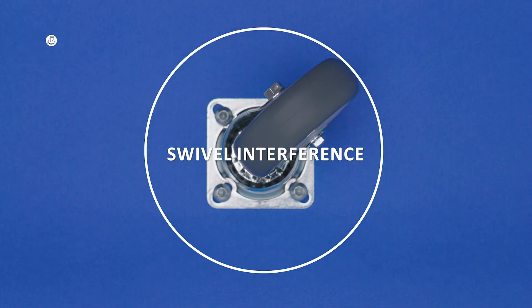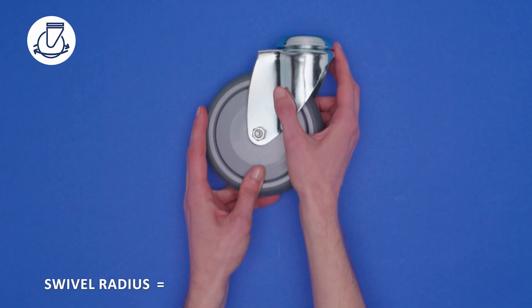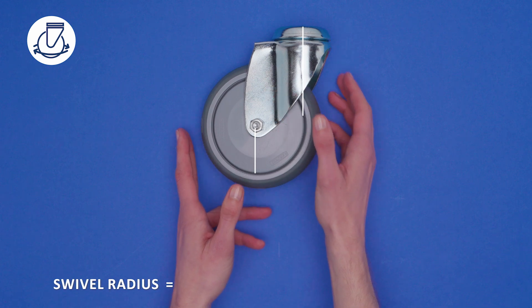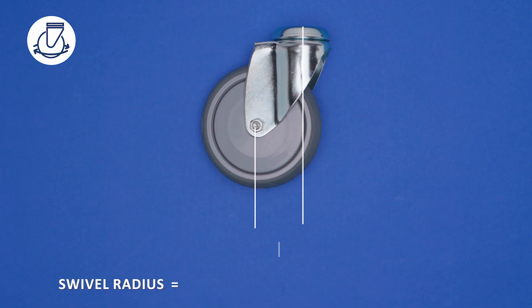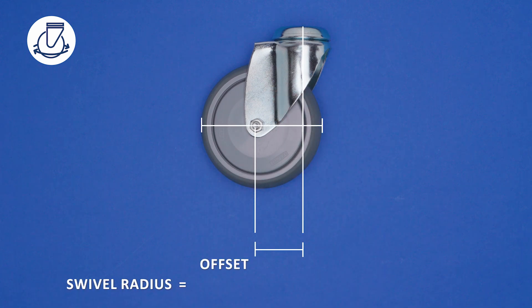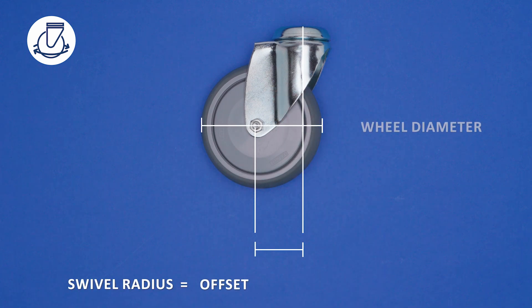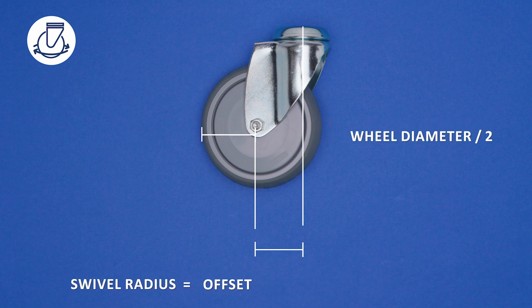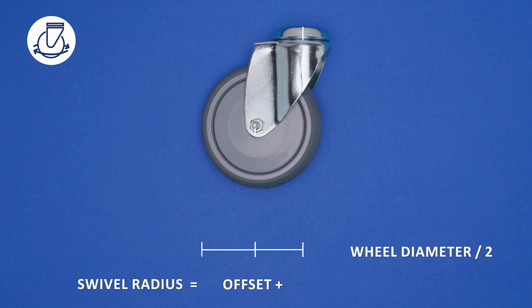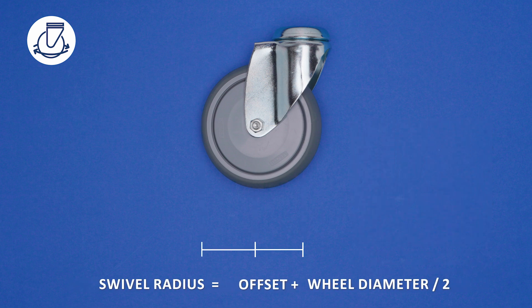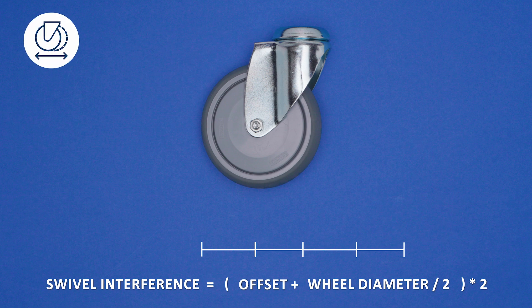The swivel interference and swivel radius of a swivel caster can be easily determined. The swivel radius equals the offset plus half the wheel diameter. By multiplying with two, we get the swivel interference.